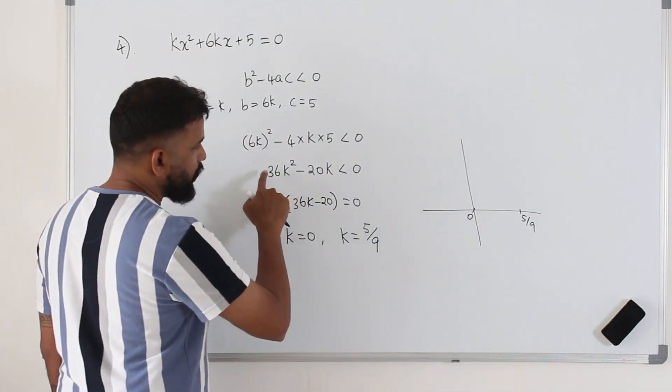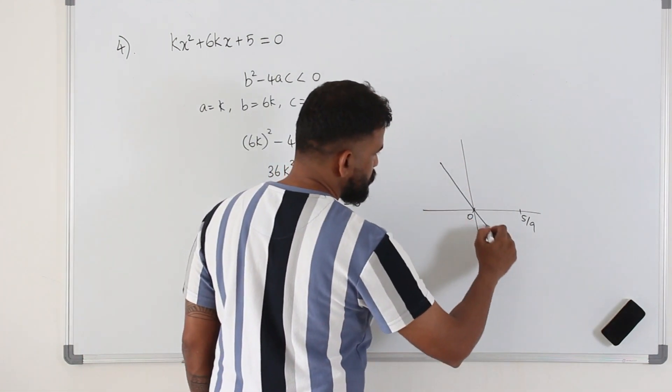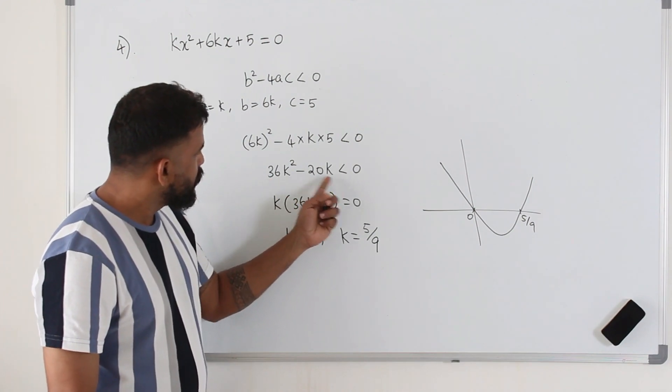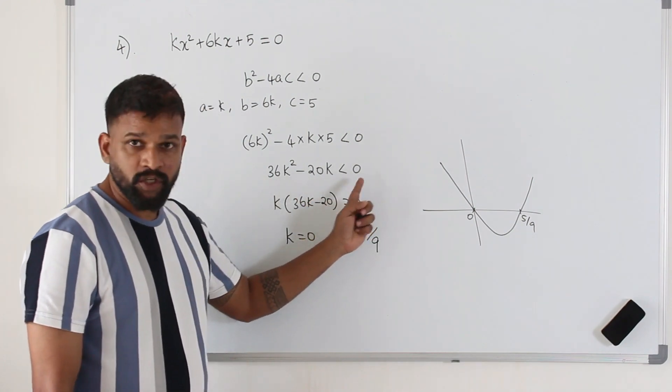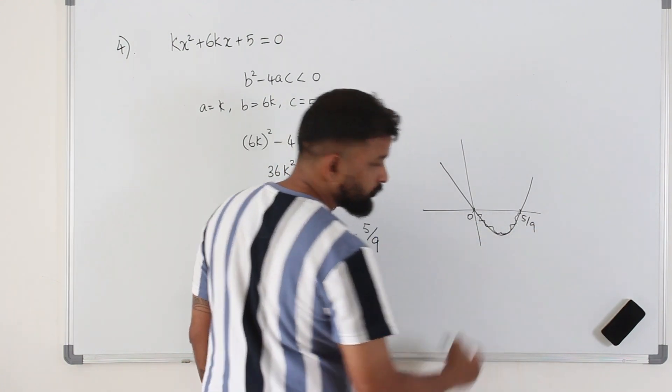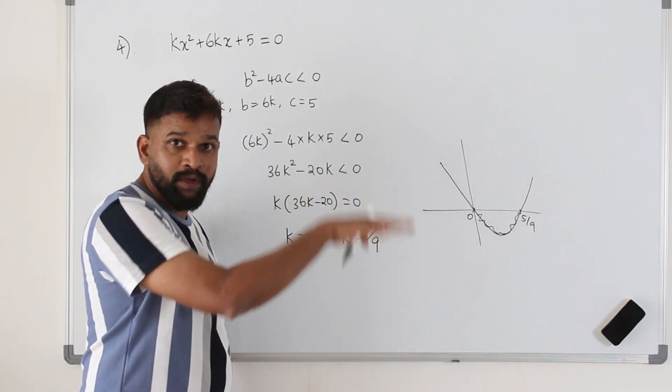The coefficient of that k square is positive, so this is going to be a u-shaped parabola. When the inequality says the function is less than 0, they are talking about this part of the function, the graph that lies below the x-axis. The corresponding x value would be this.